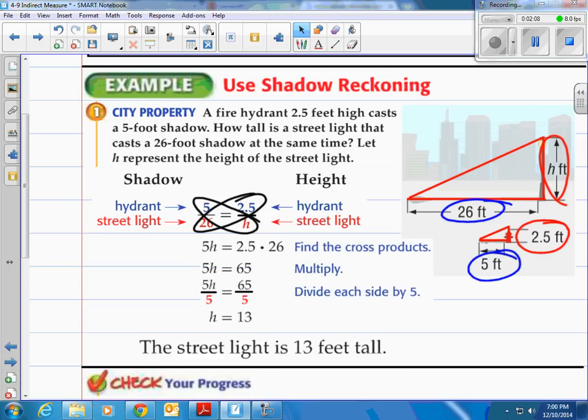So we have 5 times h and 2.5 times 26. And that equals 65 on the right side. And then we end up dividing by 5 and the height of the lamp is 13 feet tall.